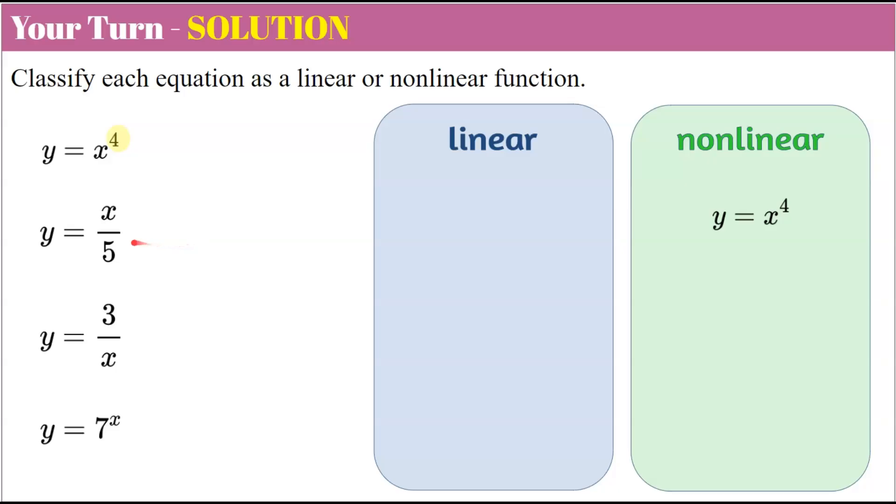Our second equation, y equals x divided by 5. So we have an invisible exponent of 1 here. And we can say that the slope of this line is one fifth. The y-intercept is 0. And it's a linear function.